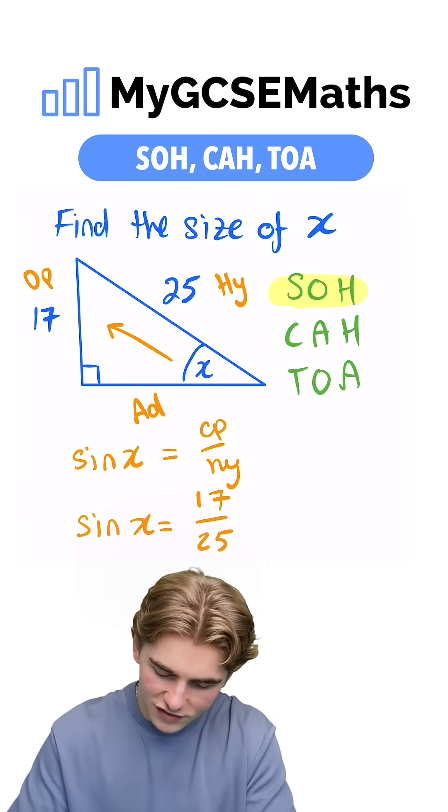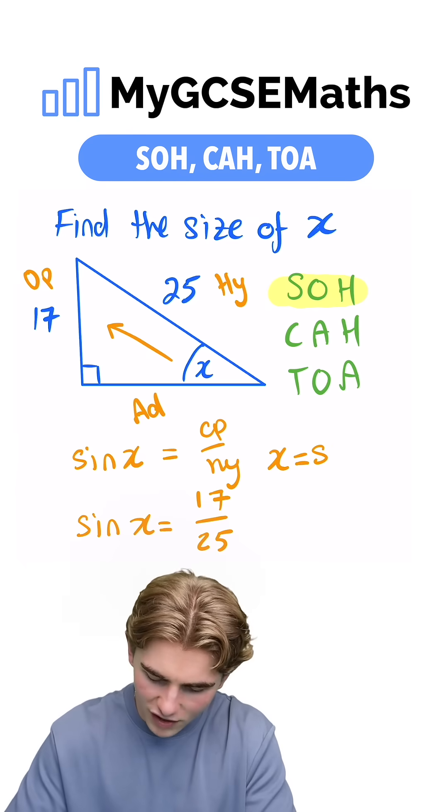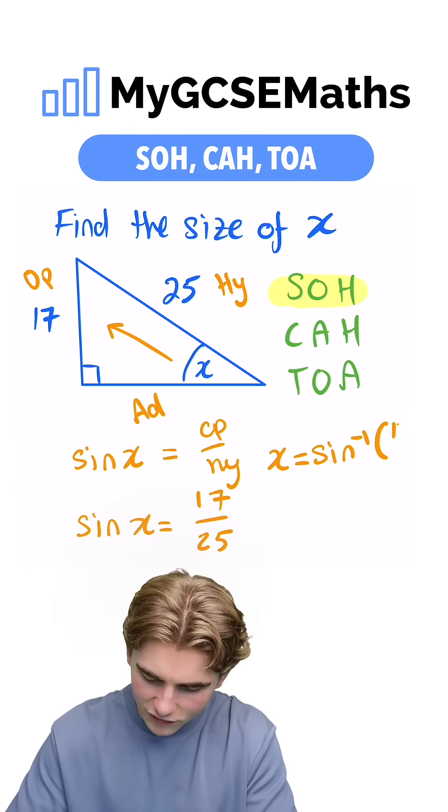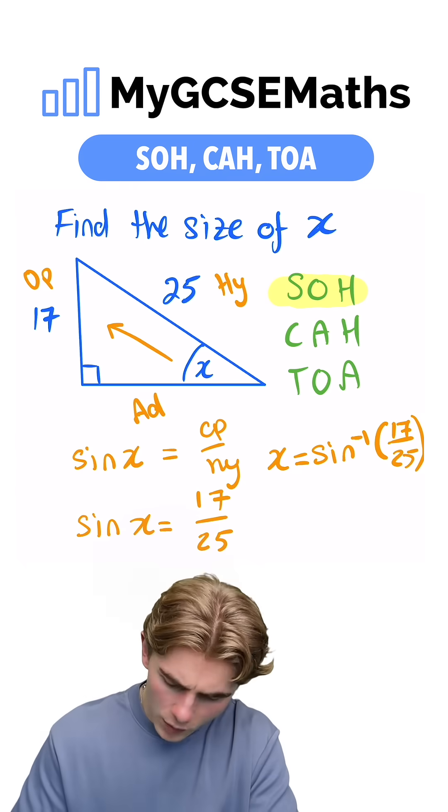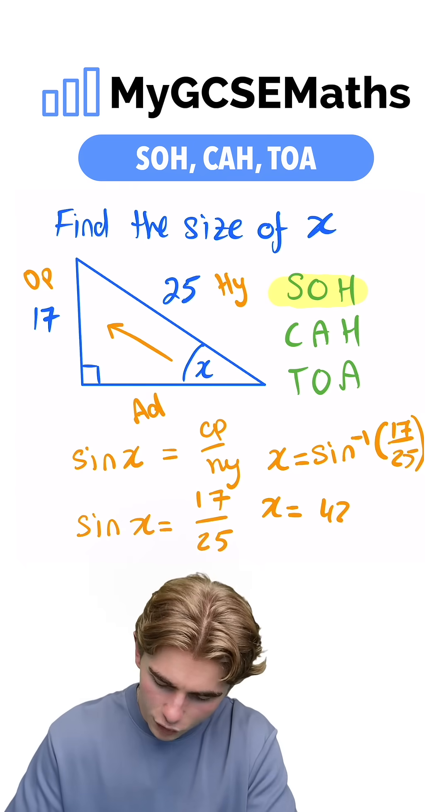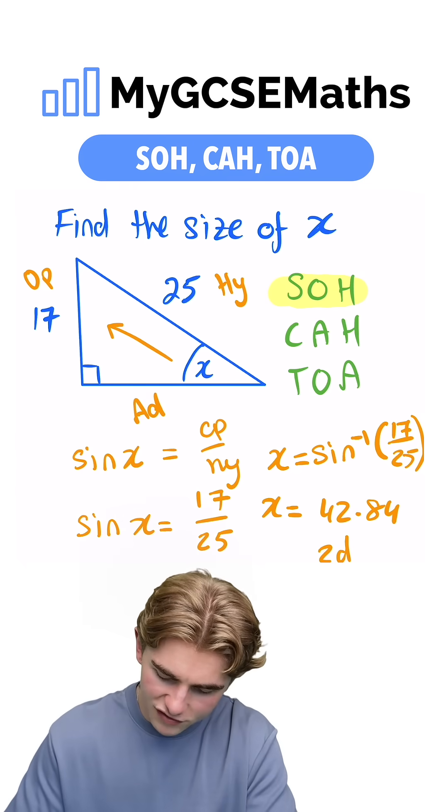Then to find the value of x, we're going to do sine to the minus one of both sides. So x equals sine to the minus one of 17 over 25. Bringing that into our calculator, we would get x equals 42.84 to two decimal places.